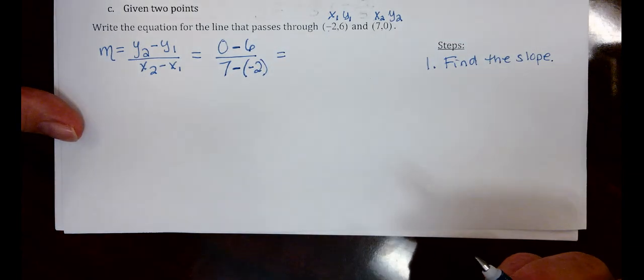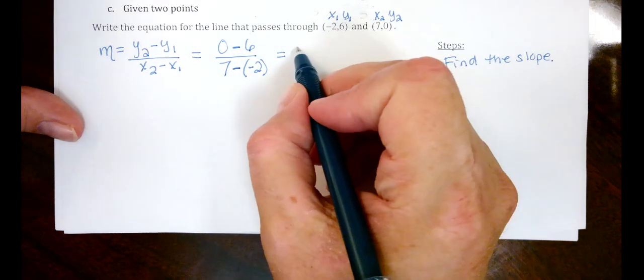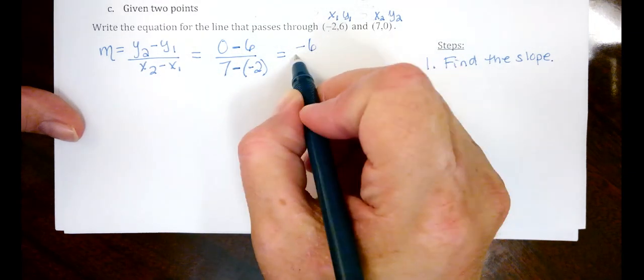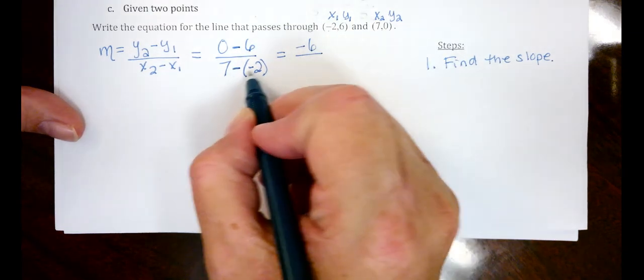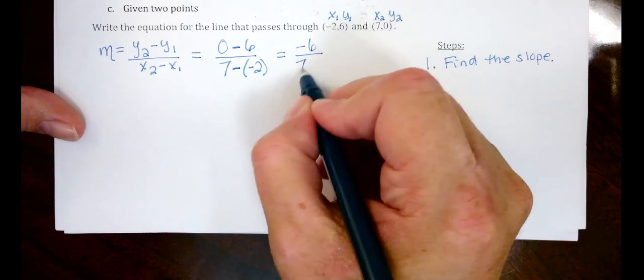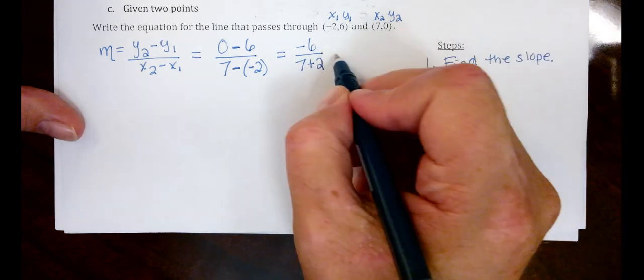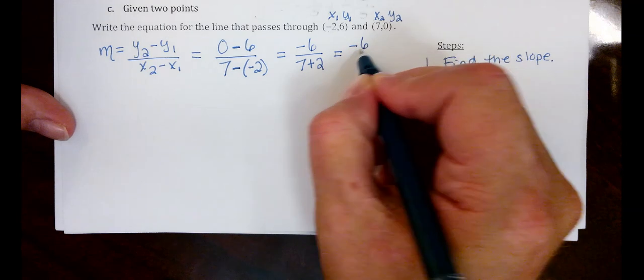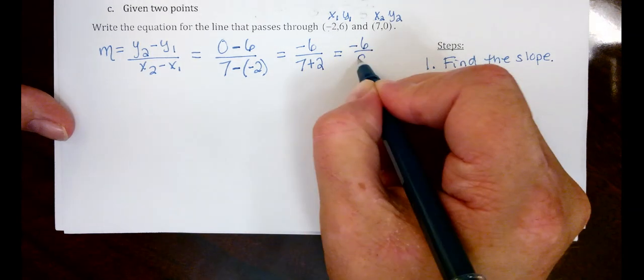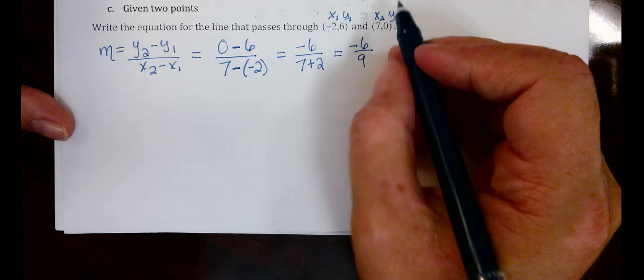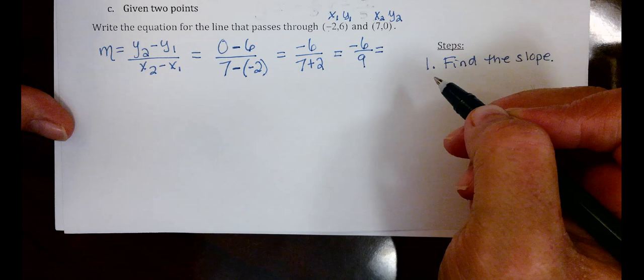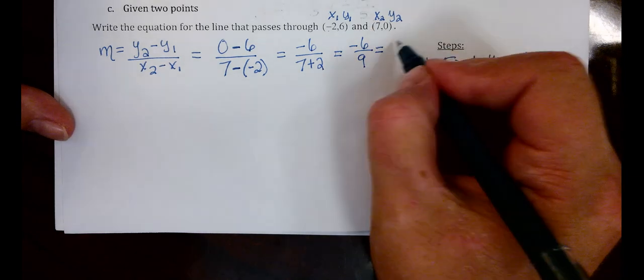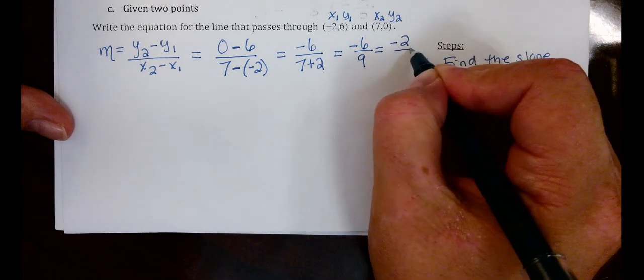Okay, let's simplify. 0 minus 6 gives me negative 6 and two negatives here give me 7 plus 2. I have negative 6 over 7 plus 2 is 9 and we obviously want to reduce this fraction. So they both divide by 3. I get negative 2 over 3.